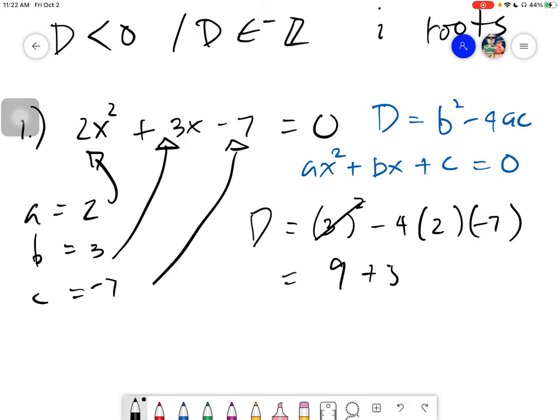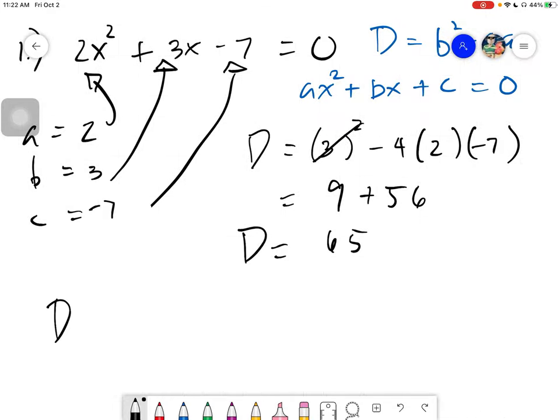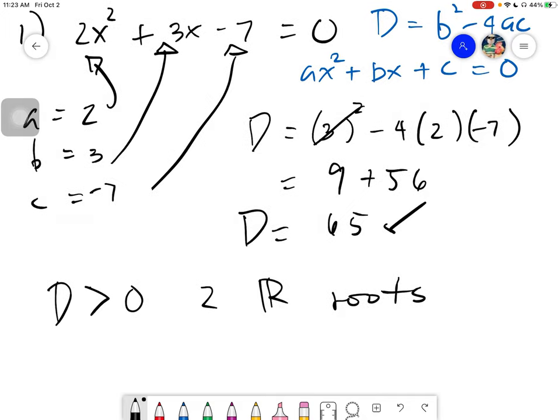So that's positive 56. When we add this, the answer is simply 65. Okay? Therefore, since the relationship of our d, which is of course positive, then if your d is greater than 0, then you will have 2 real roots. So this is our answer.